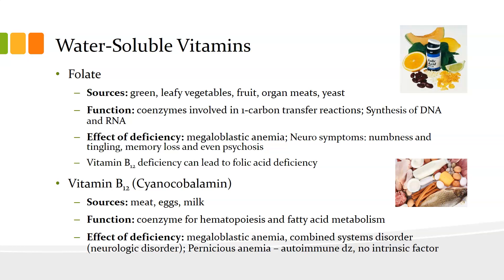Niacin is also a component of two coenzymes, NAD and NADP, which are essential for energy and ADP production. Deficiency results in pellagra, a clinical syndrome characterized by diarrhea, dementia, dermatitis, and death. Lab method is HPLC or LC-MS/MS, protect from light. Folate is found in green leafy vegetables, fruits, organ meats, and yeast. It is a coenzyme involved in one-carbon transfer reactions and the synthesis of DNA and RNA. Deficiency causes megaloblastic anemia, neurologic symptoms such as numbness and tingling in limbs, memory loss, and even psychosis. Adequate folate is essential in early pregnancy for proper embryo and fetal development. Vitamin B12 deficiency can also lead to functional folic acid deficiency.